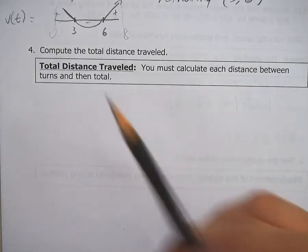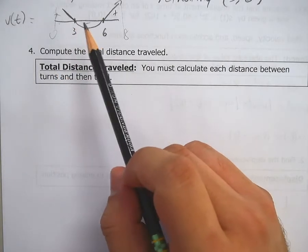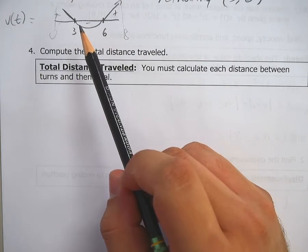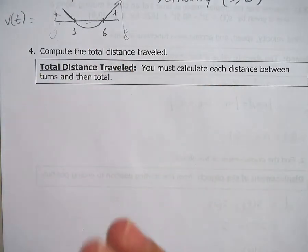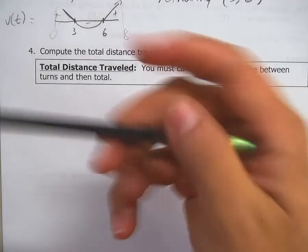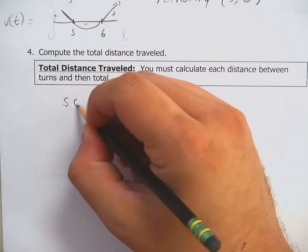and then total. Well, your turns happen when your velocity changes. So I've got a couple of different portions of this. First, where did you start? So you start at S of 0, your original position.